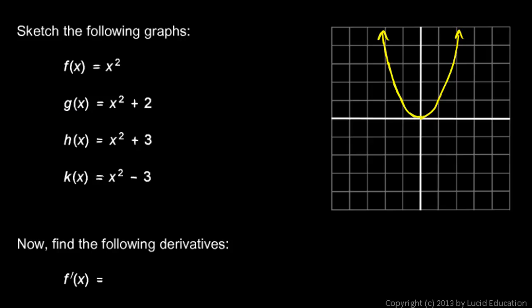Function g is x² + 2, so that's the same graph just shifted up 2. Function h is x² + 3, so it's my x² graph shifted up 3. Function k is x² - 3, so it's my original x² graph shifted down 3.